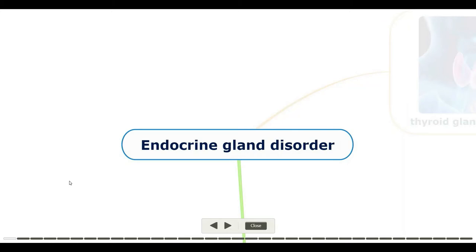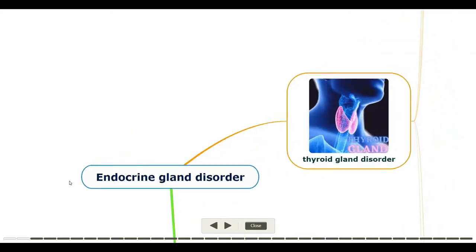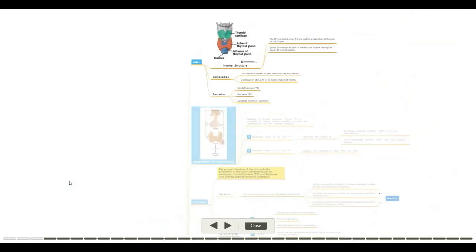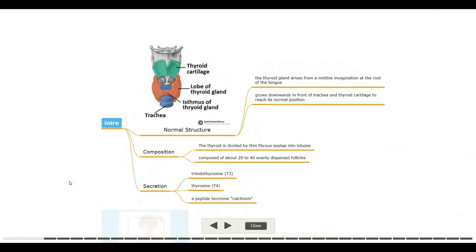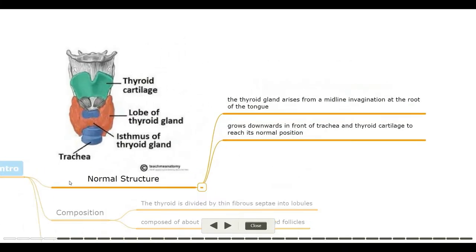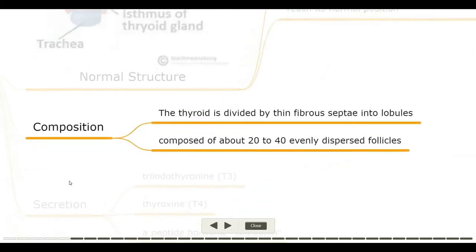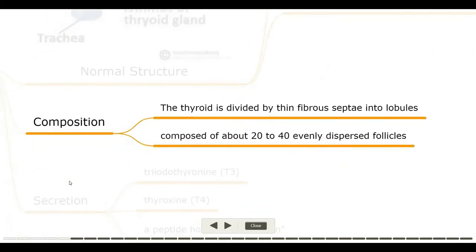Endocrine gland disorder — thyroid gland disorder. Introduction: normal structure. The thyroid gland arises from a midline invagination at the root of the tongue, grows downwards in front of the trachea and thyroid cartilage to reach its normal position.